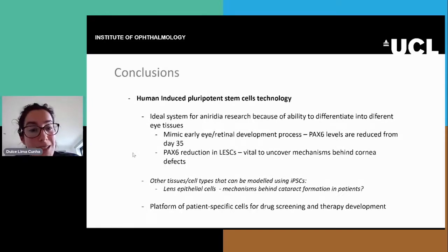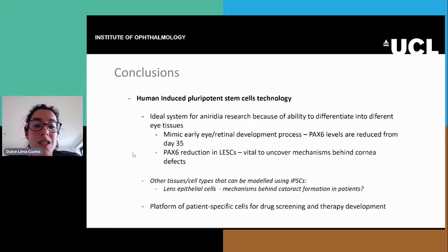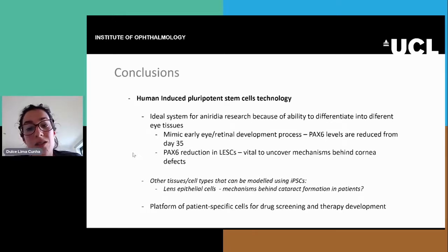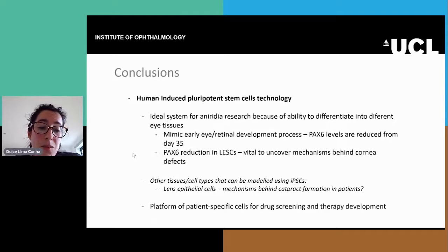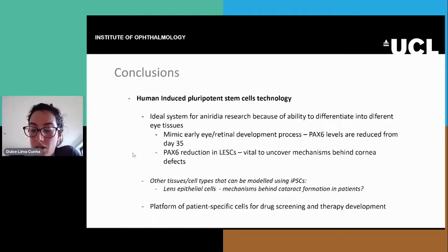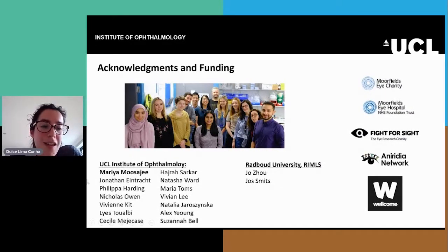To conclude, I hope I've shown you that iPSC technology can and should be applied for aniridia research, mostly because of the ability to differentiate into the different eye tissues. We show that they can mimic the early eye developmental process and that PAX6 levels are already reduced from day 35. We show a PAX6 reduction in the limbal epithelial stem cells, and these cells can be vital to uncover the mechanisms behind the corneal defects. There are also other tissues that could be modeled from iPSCs, including iPSC-derived lens epithelial cells, which could help uncover the mechanisms behind cataract formation. Ultimately, these cells can be used as a platform for patient-specific drug screening and therapy development to benefit the patients. Thank you all for listening.